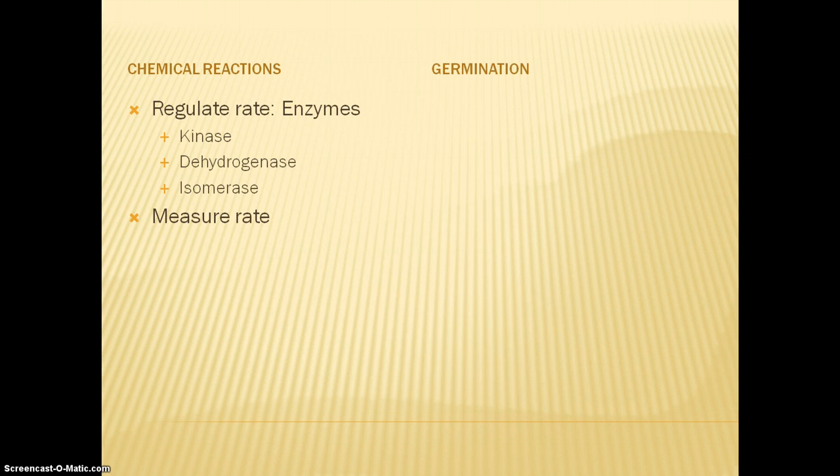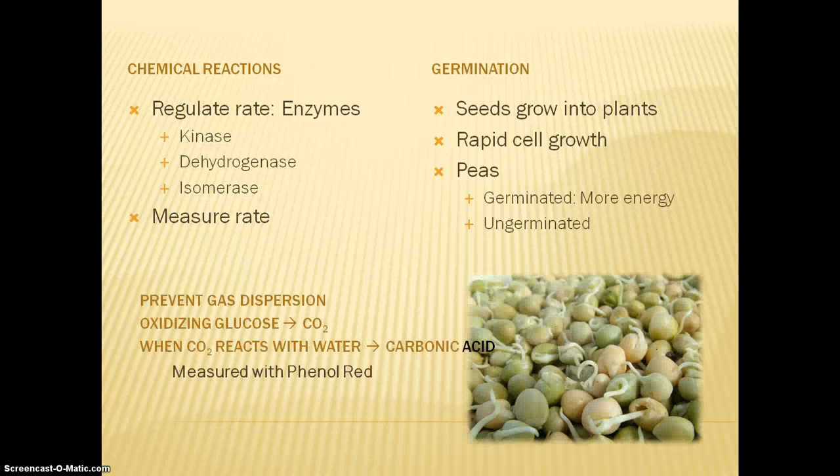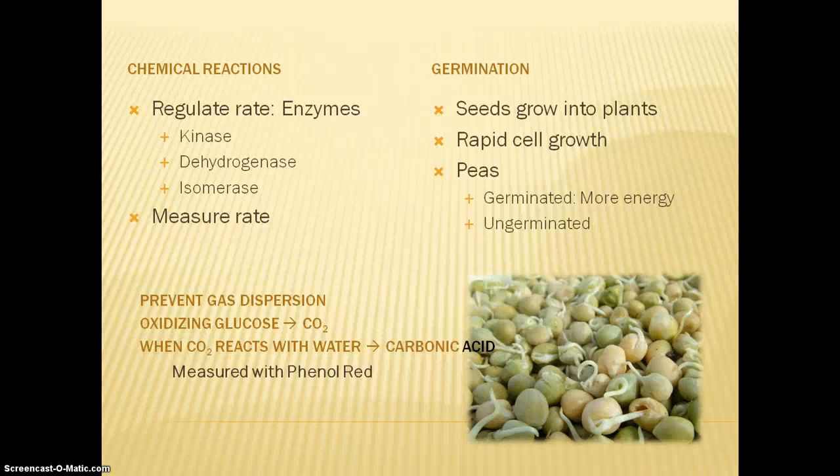Germination refers to the process by which seeds grow into plants, and it's marked by rapid cell growth. Germinated peas require more energy, which we know if we look at the CO2 production. We prevented this gas from dispersing in the air by submerging the tubes in water. The oxidation of glucose yields CO2, and when CO2 reacts with water, it forms carbonic acid, which we measured using an indicator called phenyl red, and also by looking at pH.